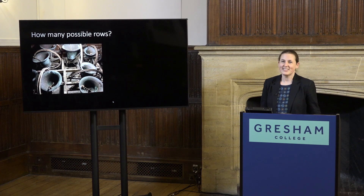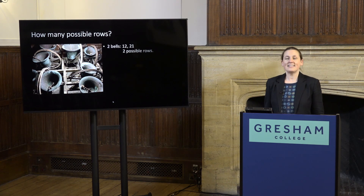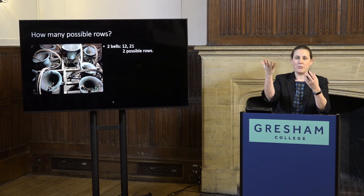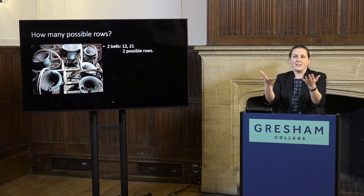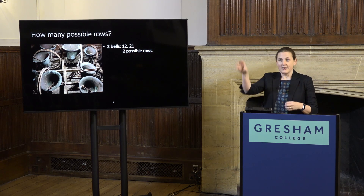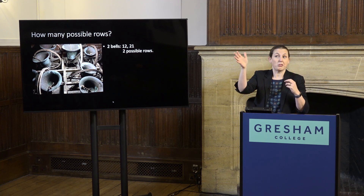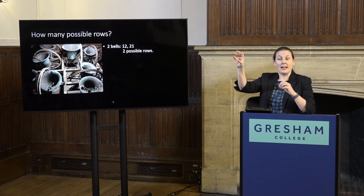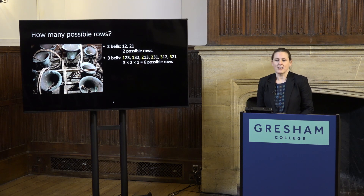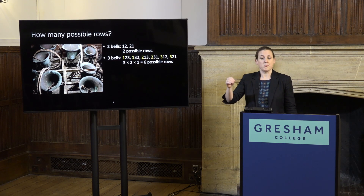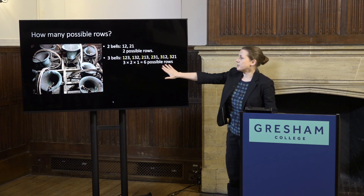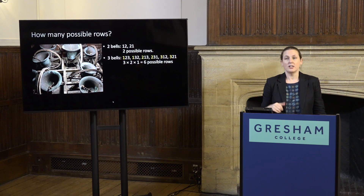Let's start with a small n — that's what we do in mathematics. Start with two bells: you can either play bell one first then bell two, or two then one — two possibilities. If you go up to three bells, there are three choices for what goes first, then two ways to play the remaining two bells. So for three bells that's three times two times one, which is six possible rows. For four bells, you've got four choices for what goes first, then three, then two, then one — four times three times two times one, which is 24.